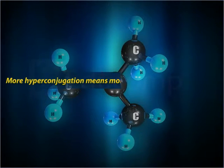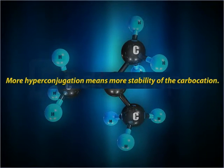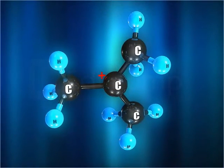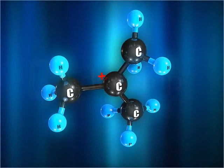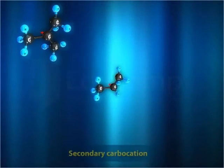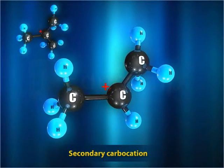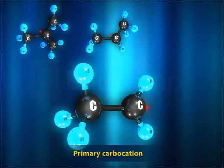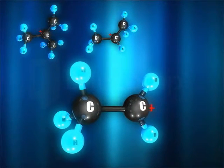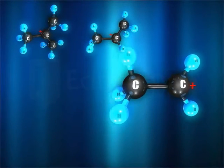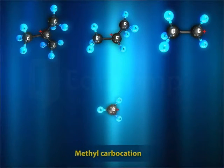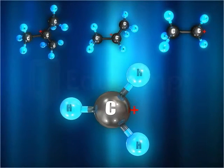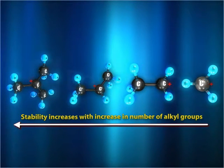More hyperconjugation means more stability of the carbocation. Hence, tertiary carbocations are more stable than secondary carbocations, which in turn are more stable than primary carbocations. Primary carbocations are more stable than methyl carbocations, which do not have any sigma bond adjacent to the p orbital to exhibit hyperconjugation.